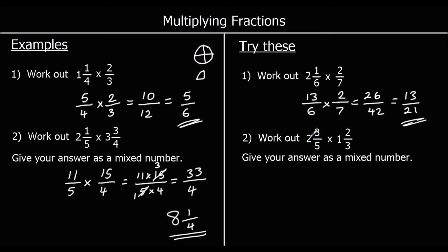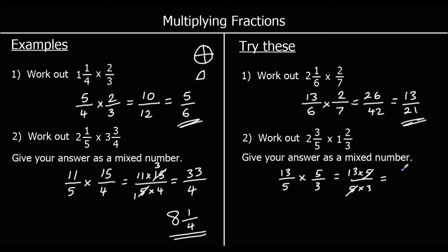For question two, we've got two and three-fifths: two fives are ten, so ten-fifths plus three-fifths is thirteen-fifths. Times one whole one and two-thirds: the whole one is three-thirds plus two is five-thirds. So we've got thirteen times five over five times three. We can divide top and bottom by five, which leaves us with thirteen-thirds. How many times does three go into thirteen? Four threes are twelve, so we've got four whole ones — that's twelve-thirds — and one more. So the answer is four and one-third.